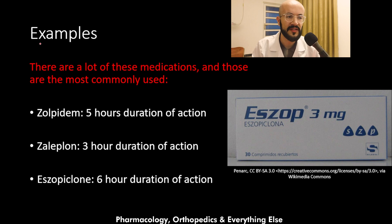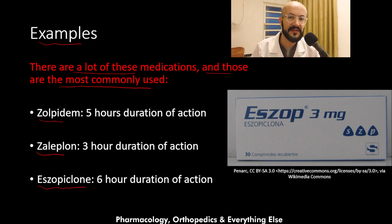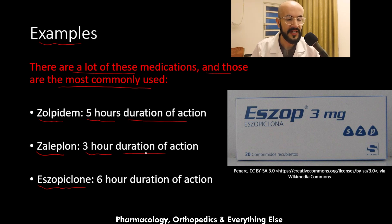Now let's mention some examples of these medications. The most commonly used ones are Zolpidem, Zaleplon, and Eszopiclone. All of these medications have a short duration of action. Zolpidem has a five-hour duration of action, Zaleplon has a three-hour duration of action, and Eszopiclone has a six-hour duration of action.